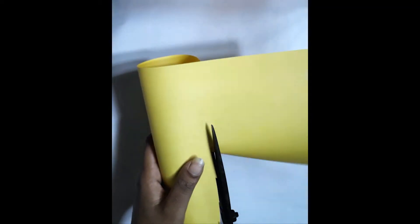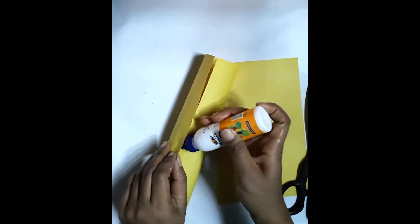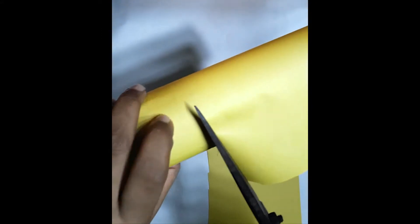Now cut the paper with a scissor for a dusting shape. Cut again at its corners with a scissor.